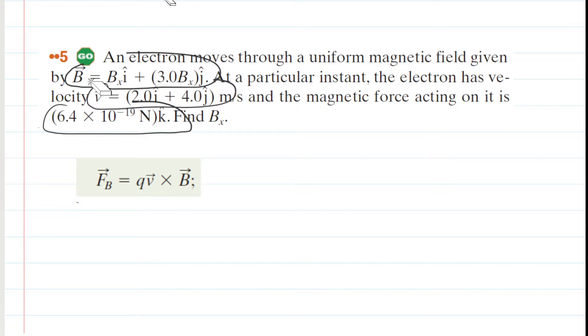So we need some kind of a relationship that correlates magnetic field, velocity, and force, and also a charged particle, which in this case is an electron. And of course, we have such a relationship right here. We know that the magnetic force vector acting on a charged particle is equal to the charge multiplied by the cross product of velocity and magnetic field.